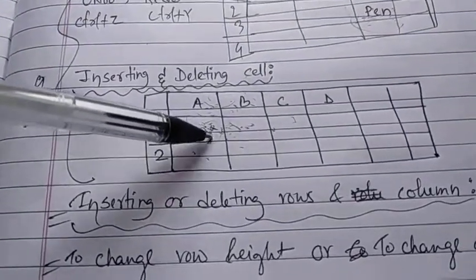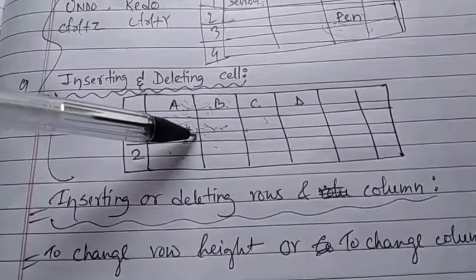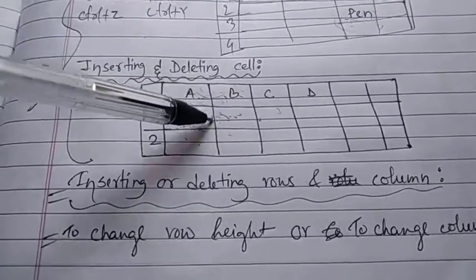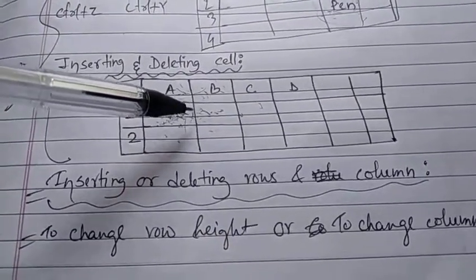When you have to insert a new row or new column, it's better to use the mouse so you can quickly insert rows and columns. Similarly, if you have to delete a row or delete a column, right-click on the row.